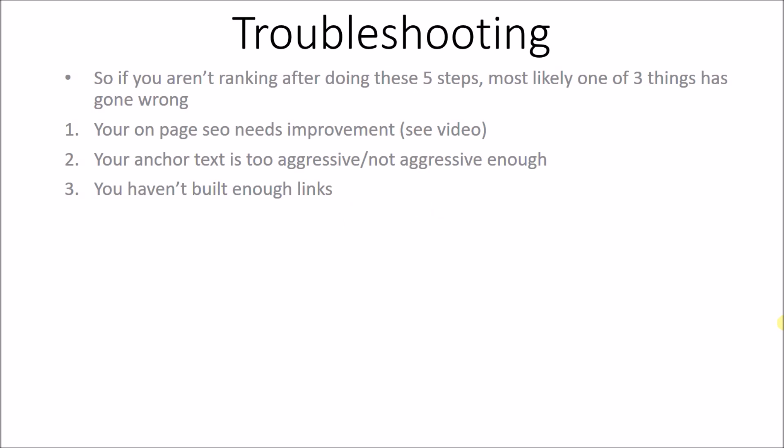A couple of problems you might run into: if you aren't ranking after doing these five steps, most likely one of three things has gone wrong. Number one: your on-page SEO needs improvement — go back and reference the on-page SEO video to see what you did wrong and fix it. Number two: your anchor text is either too aggressive or not aggressive enough. Check your anchor text profile to see if you've sent too many exact match or partial anchors, or if you've been too non-aggressive and haven't sent even one.